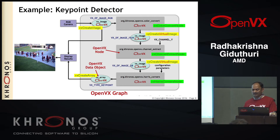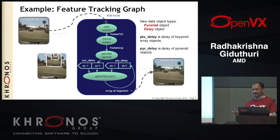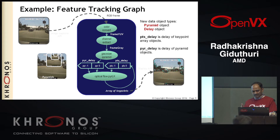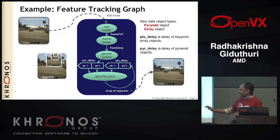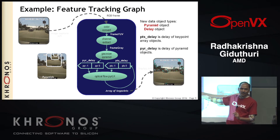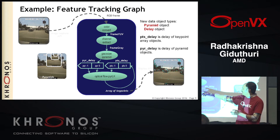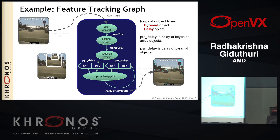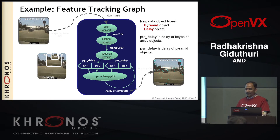We insert color convert node, channel extract node, and Harris corner node into the graph. For the feature tracking graph: we assume we already have key points and a pyramid from a previous frame. We pass input through color convert, then need a delay object with two elements — one for current, one for previous — and similarly a delay of pyramids.